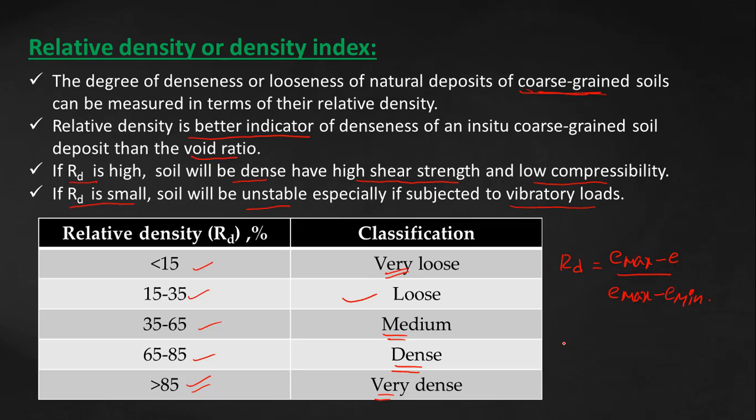Another formula also exists in terms of dry densities that will be like this: 1 by gamma-d minimum minus 1 by gamma-d, all divided by 1 by gamma-d minimum minus 1 by gamma-d maximum.